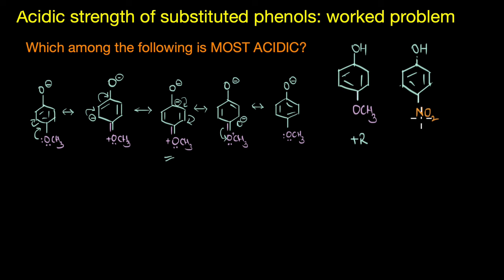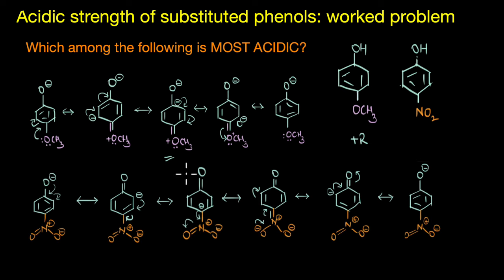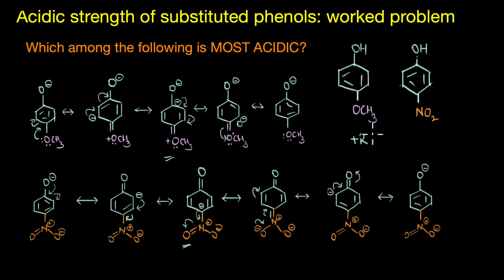Contrasting that with the conjugate base of paranitrophenol, we can see that the nitro group at the para position effectively draws the electron density away from the ring. It increases the polarity of the C-O bond, favoring more ionization, and also stabilizes the negative charge as it can delocalize onto the more electronegative oxygen atom. Because the conjugate base of paranitrophenol is more stable than that of paramethoxyphenol, the most acidic molecule here is paranitrophenol, confirming once again that acidic strength depends on the stability of the conjugate base.